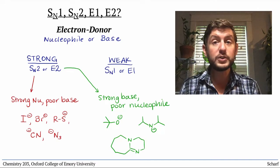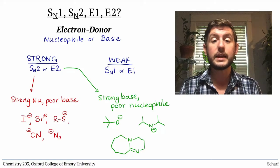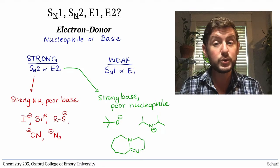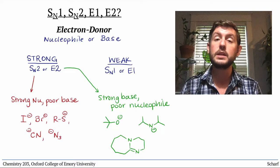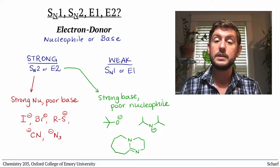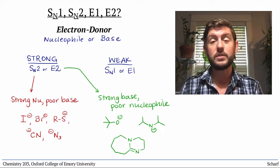The first two factors, substrate and electron donor structure, are usually enough to help us determine the likely mechanism of a reaction. They're the most important factors.